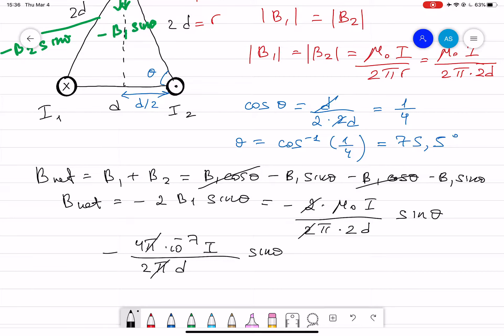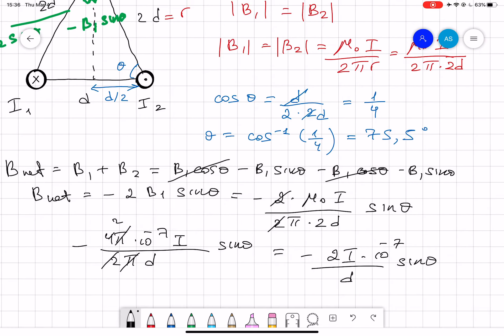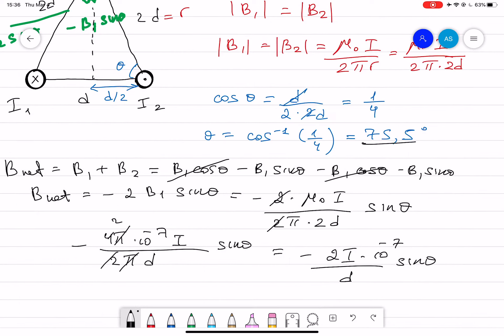Now pi will cancel out, this will cancel out, so we end up with the final formula will be negative 2 I multiplied 10 to the power of minus 7 divided by d sine theta. So that's it, d you have it, current you have it, sine theta will be 75 degrees. So that's it, I think you should plug numbers, you should get the answer.